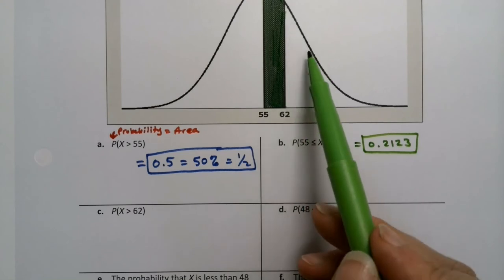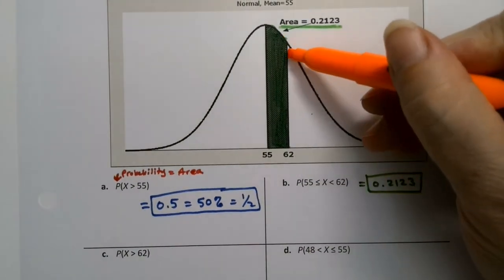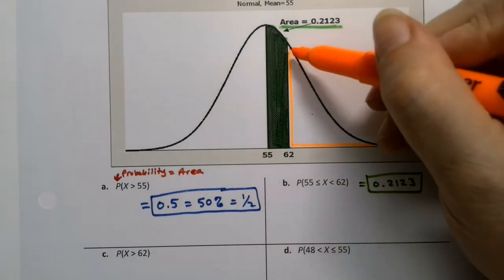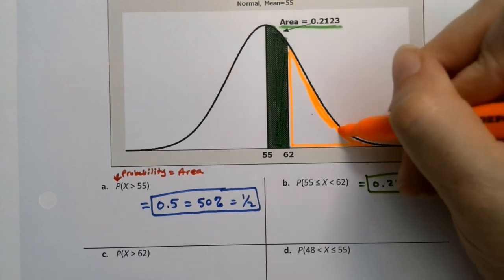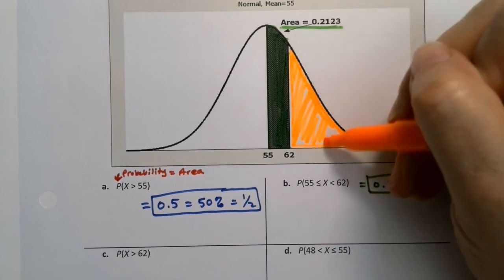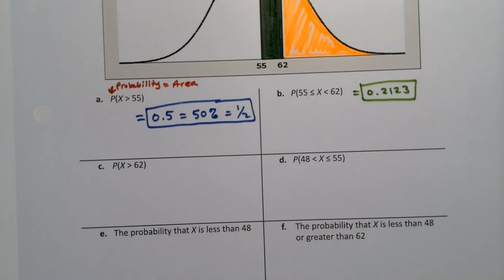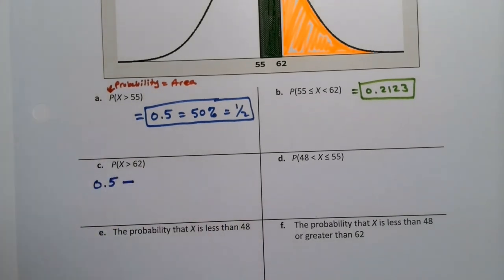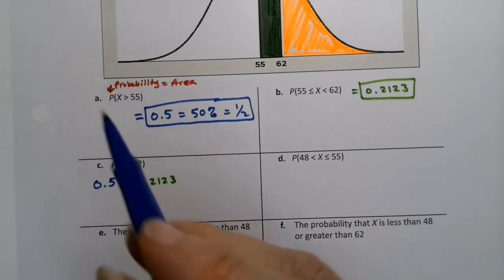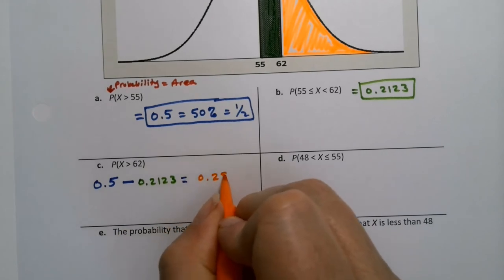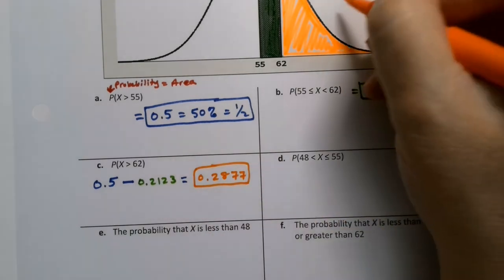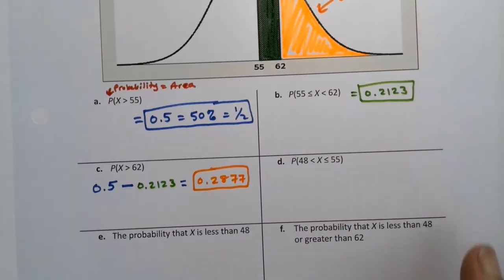What about the probability that X is greater than 62? Greater than 62 is from 62 over and underneath that curve. So it's this whole zone over here. Now, how would we find that area? Well, remember, from 55 all the way over, we just said it was 0.5. And this little green zone right here is 0.2123. So if that's 0.2123, can't we take that away from 0.5 and we'll know what this orange zone is? So we take 0.5 and we subtract away 0.2123, and we end up with 0.2877.